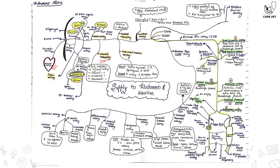The caudal mesentery artery supplies the colon and the rectum. Next are the testicular and ovarian arteries. In males, they supply the tunica vaginalis, vas deferens, epididymis, and testis. In females, they supply the ovary and fallopian tube.